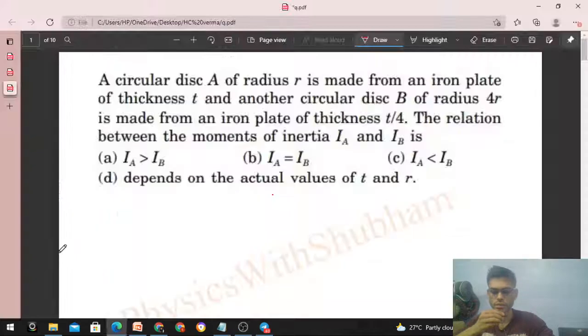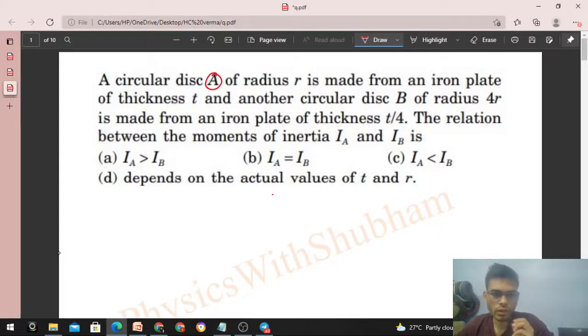Okay, hi everyone. Today let's discuss this interesting problem. It says a circular disc A of radius r is made from an iron plate of thickness t, and another circular disc B of radius 4r is made from an iron plate of thickness t/4. The relation between the moments of inertia IA and IB is?